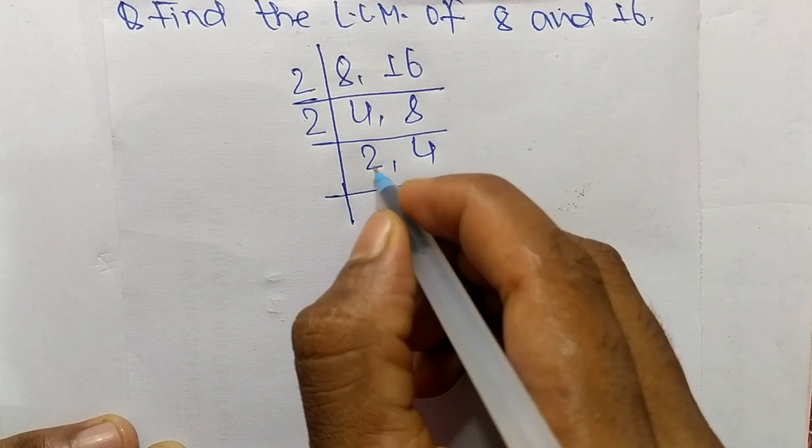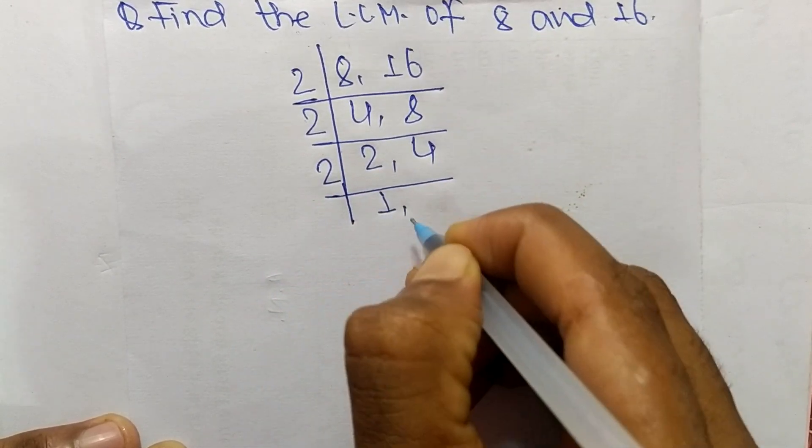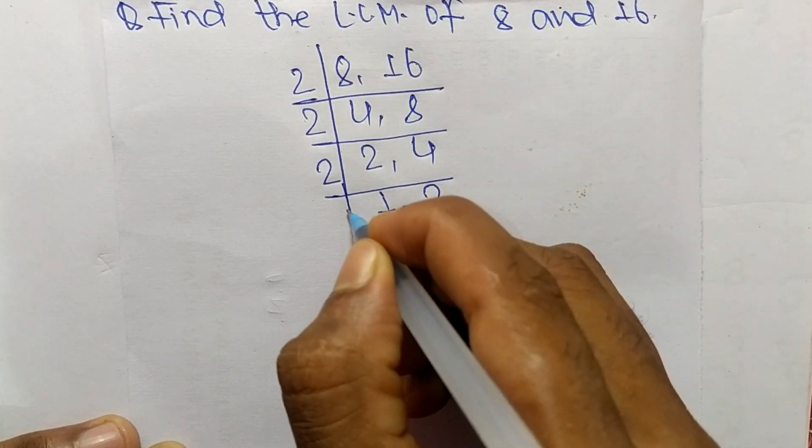So again 2 can divide both numbers. So 2 times 1 means 2 and 2 times 2 means 4.